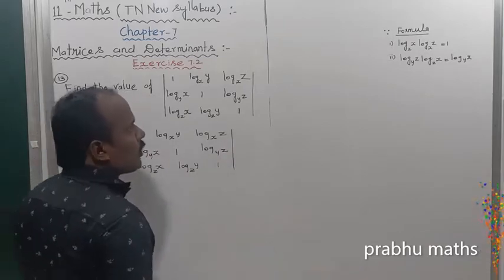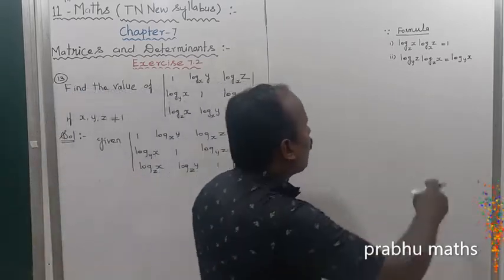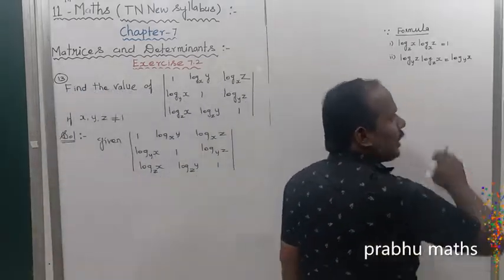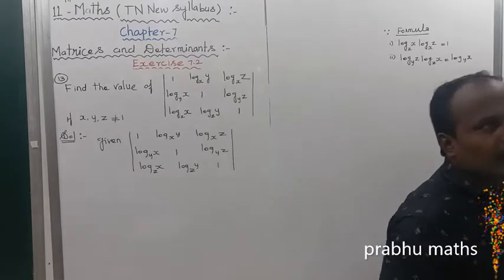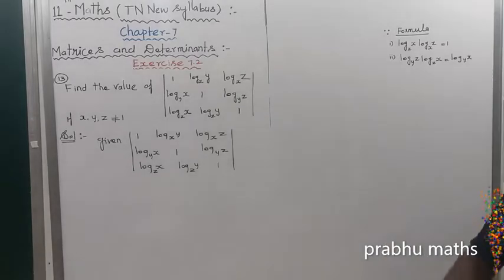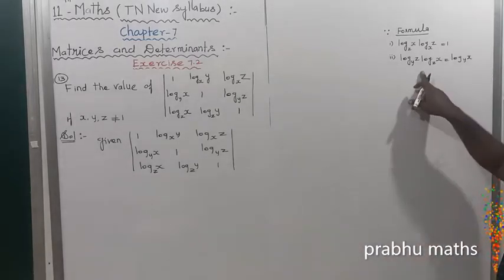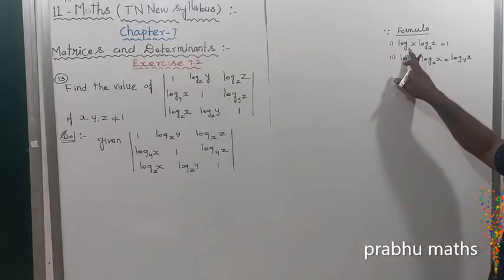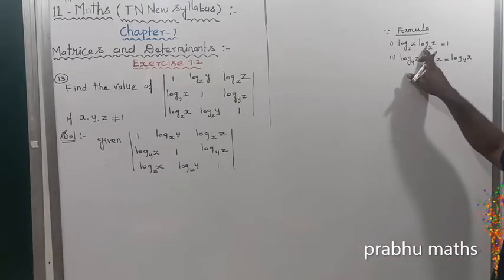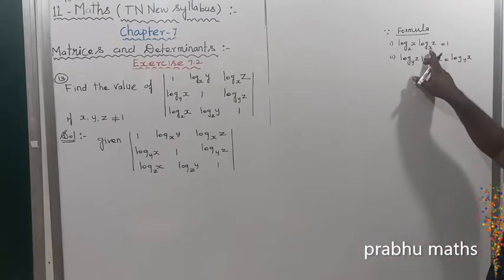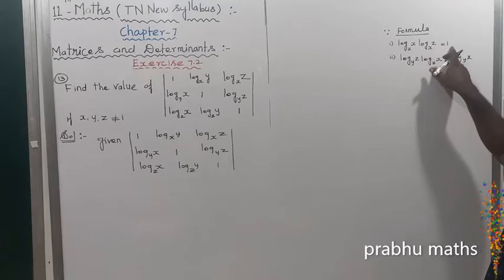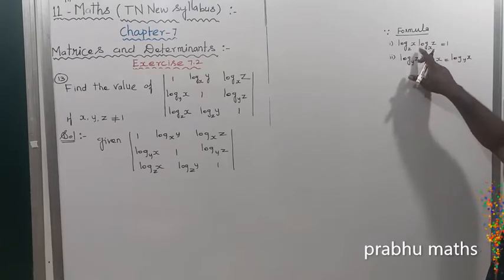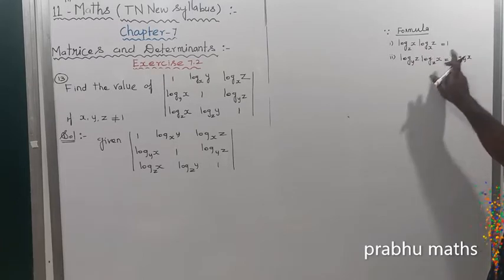Why are we using this formula? This is from the second lesson, the 11th standard second lesson formula. So log z x times log x z is equal to 1 — the reciprocal product is equal to 1.